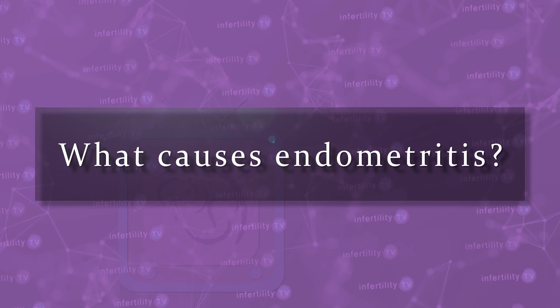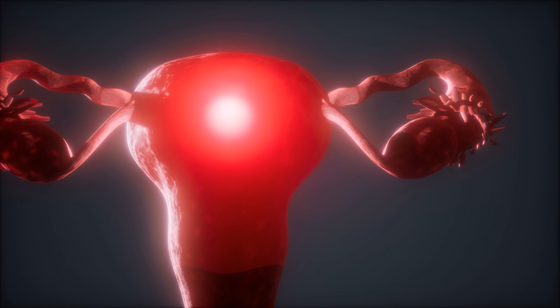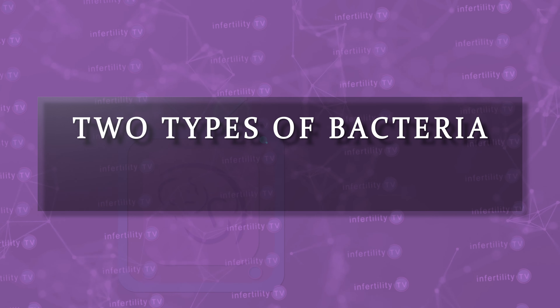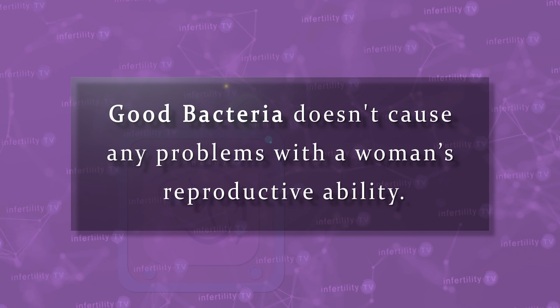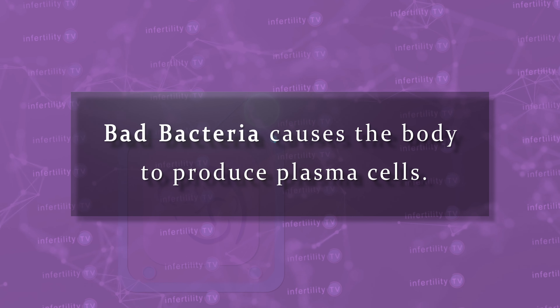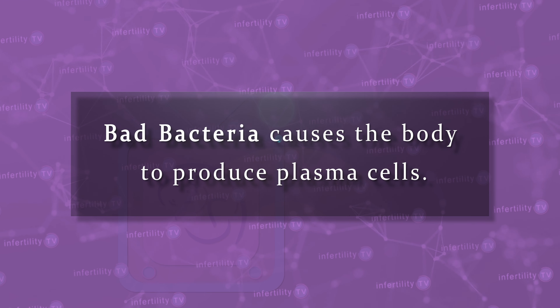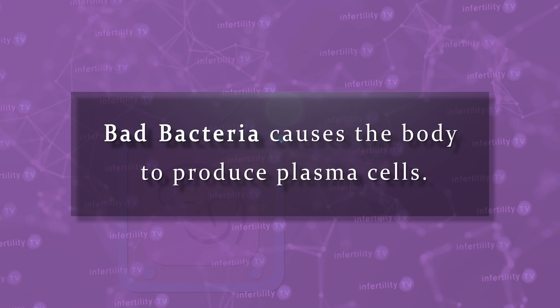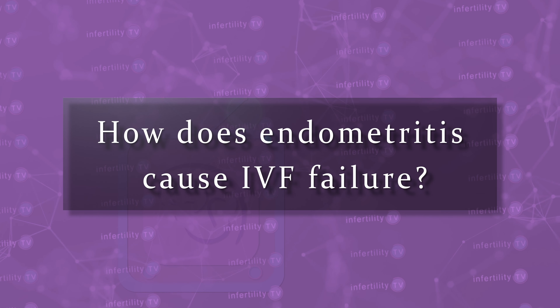What causes endometritis? Like the vagina, the inside of the uterine cavity contains bacteria. We can divide the bacteria into two types: good and bad. Good bacteria don't cause any problems with a woman's reproductive ability. Bad bacteria are those that cause the patient's body to produce plasma cells. Remember, plasma cells are white blood cells — what the body uses to fight off bad bacteria.